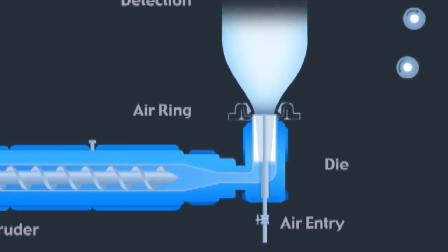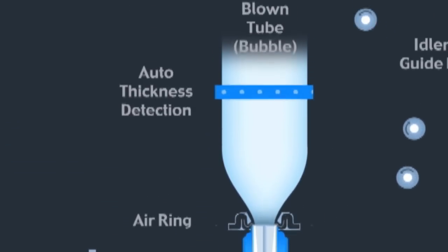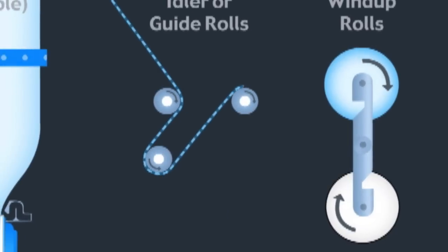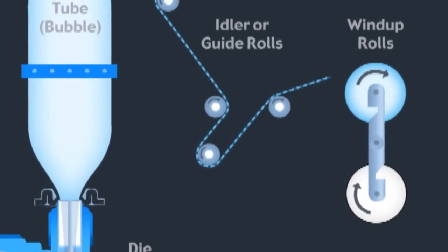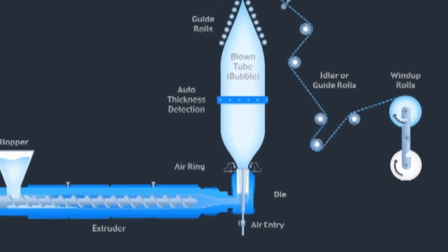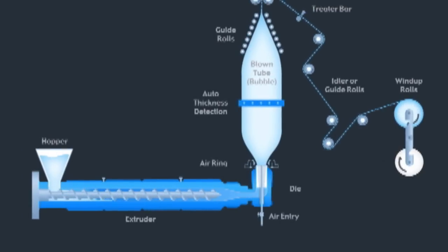That sleeve is expanded into a vertical bubble using internal air pressure. The bubble is cooled as it travels upward and is wound into various size rolls. This method of film processing enables us to enhance physical properties of our film and tailor it for a wide range of needs.